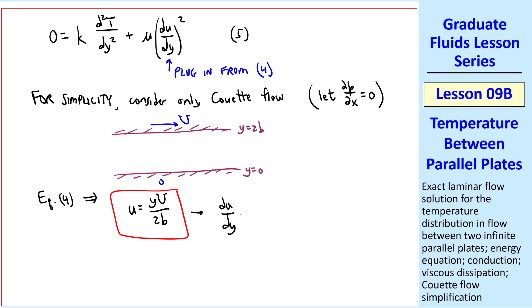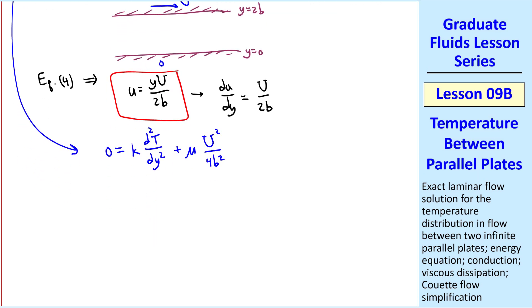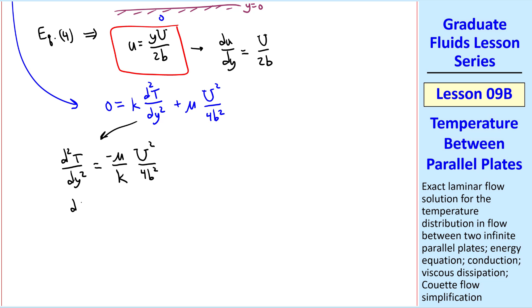Well, we need the derivative of u, so du dy is u over 2b, and equation 5 becomes 0 equal k d squared t dy squared plus mu u squared over 4b squared, which we can easily rewrite to solve for t, namely d squared t dy squared is minus mu over k u squared over 4b squared.